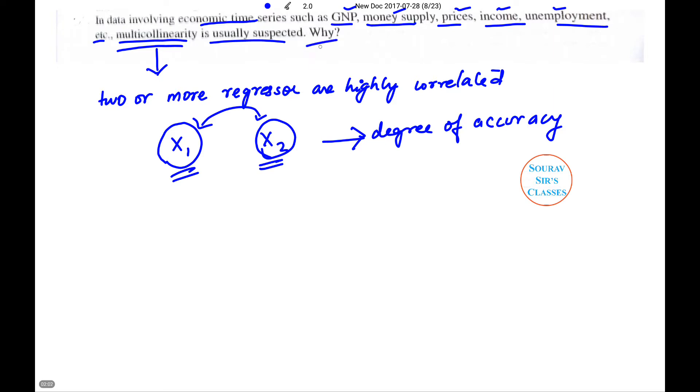Let us consider what are economic variables. Examples of economic variables are many: GNP, money supply, unemployment, poverty rate, inflation rate, interest rate.